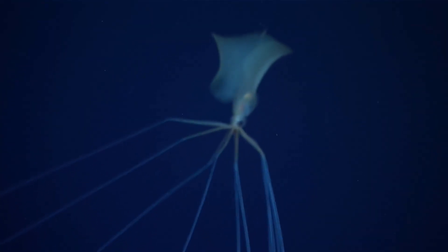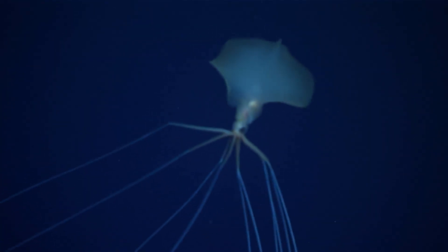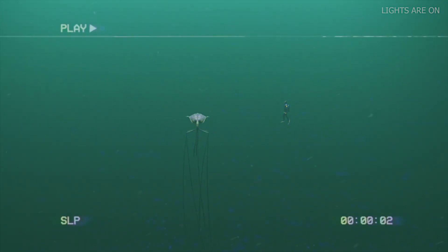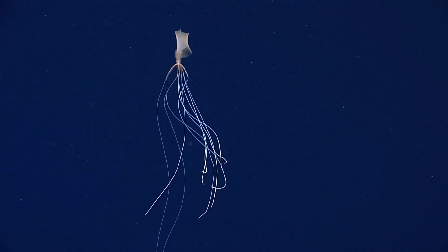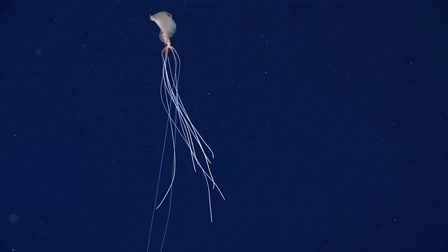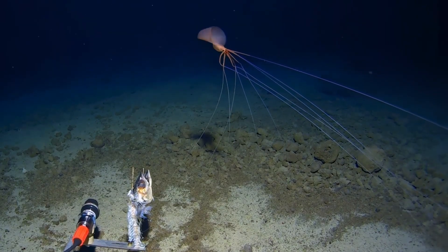Magnapinna moves like a ghostly kite suspended in still water. It doesn't swim. It floats, holding its arms at right angles, manipulating the currents with precise puppet-like control. Its colorless glassy skin renders it invisible even to creatures that produce their own light.